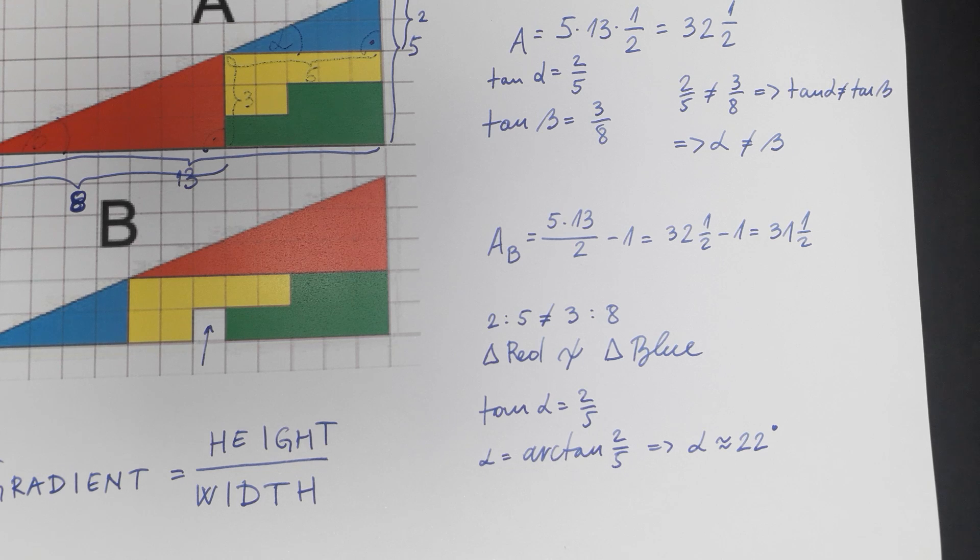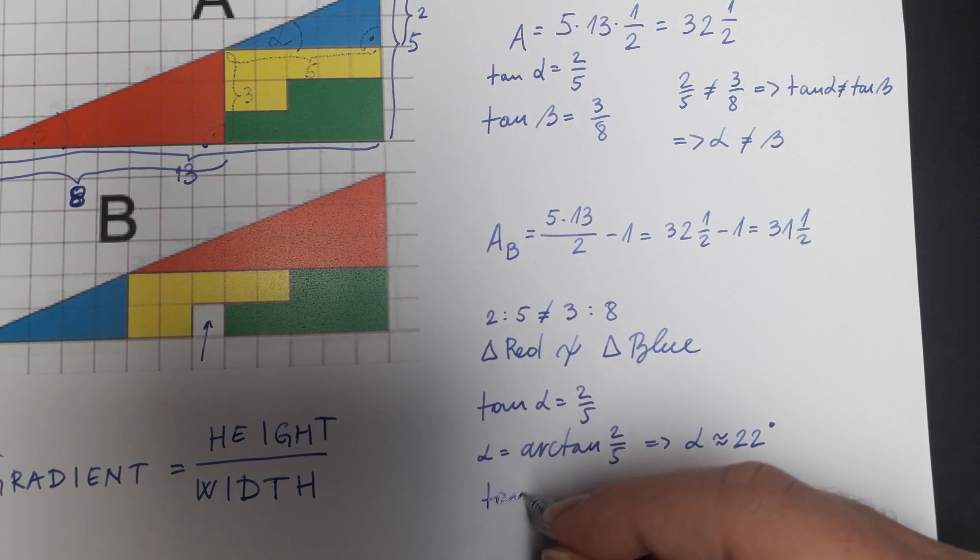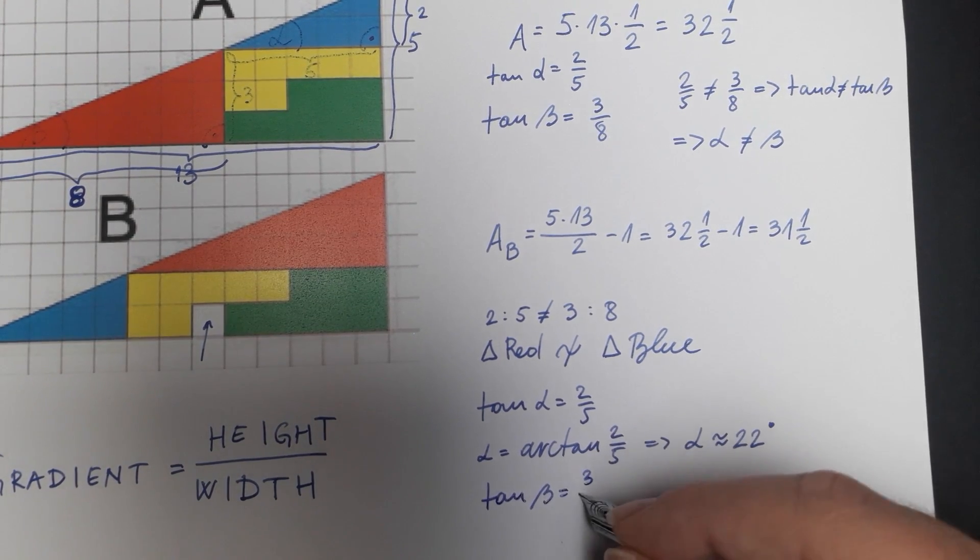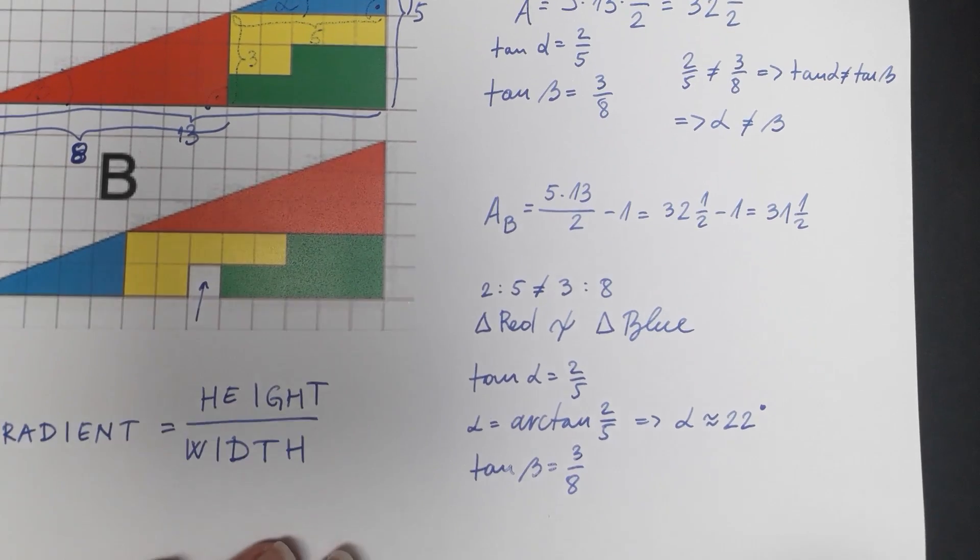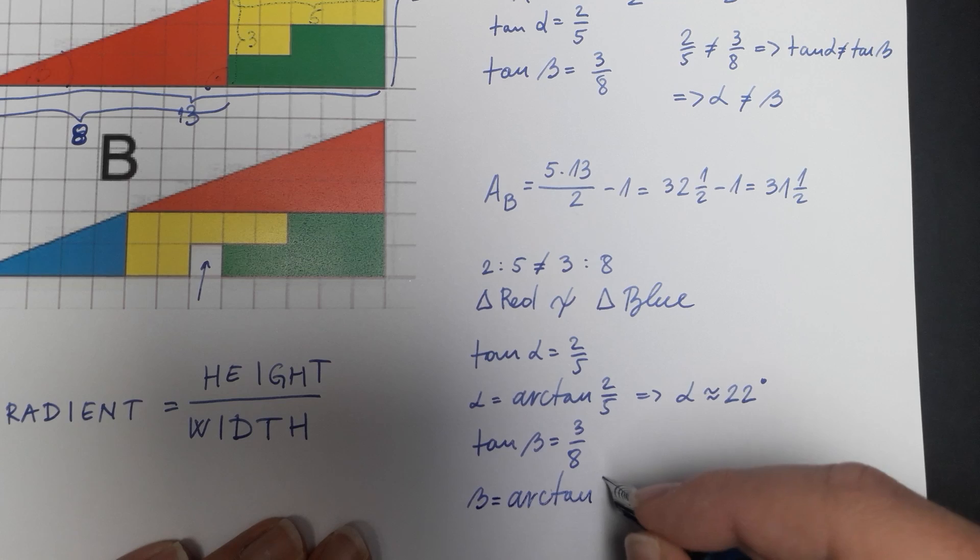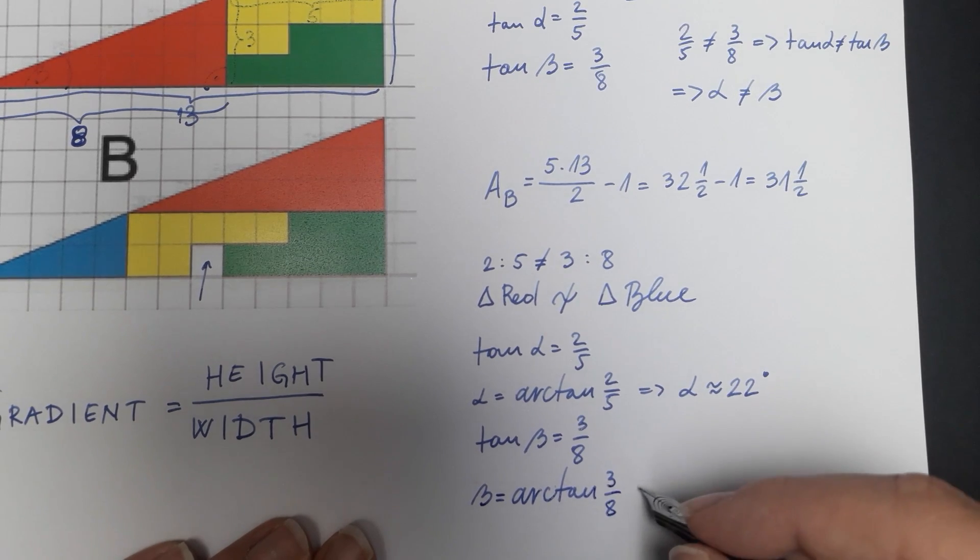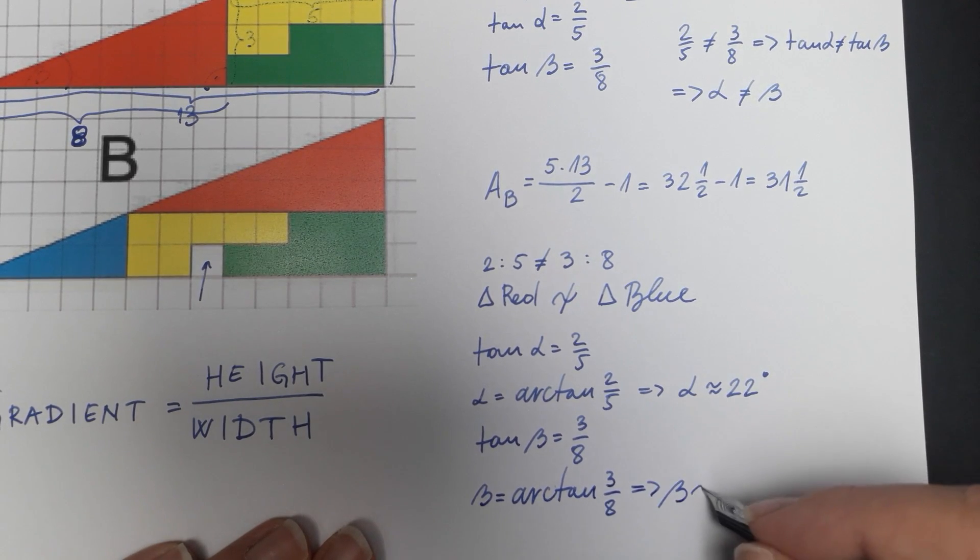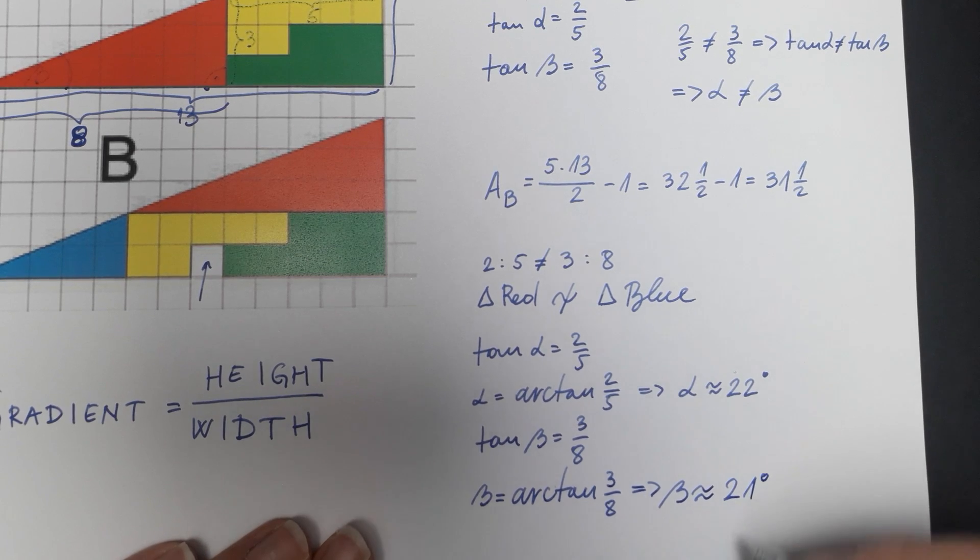Now let's take a look at the red triangle and its angle beta. We see that tan of beta is equal to 3 divided by 8. That means that beta is equal to arctan of 3 divided by 8 and that means that beta is approximately 21 degrees.